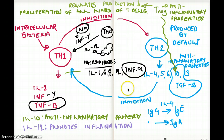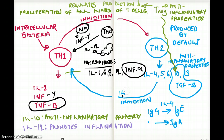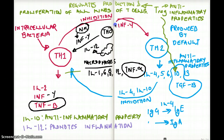One last thing: the inhibition from T helper 2 to T helper 1 is not achieved by all interleukins — it is specifically achieved by IL-4 and IL-10. And the inhibition from T helper 1 to T helper 2 is mediated by interferon gamma. That was my interpretation of the differentiation of T cells.